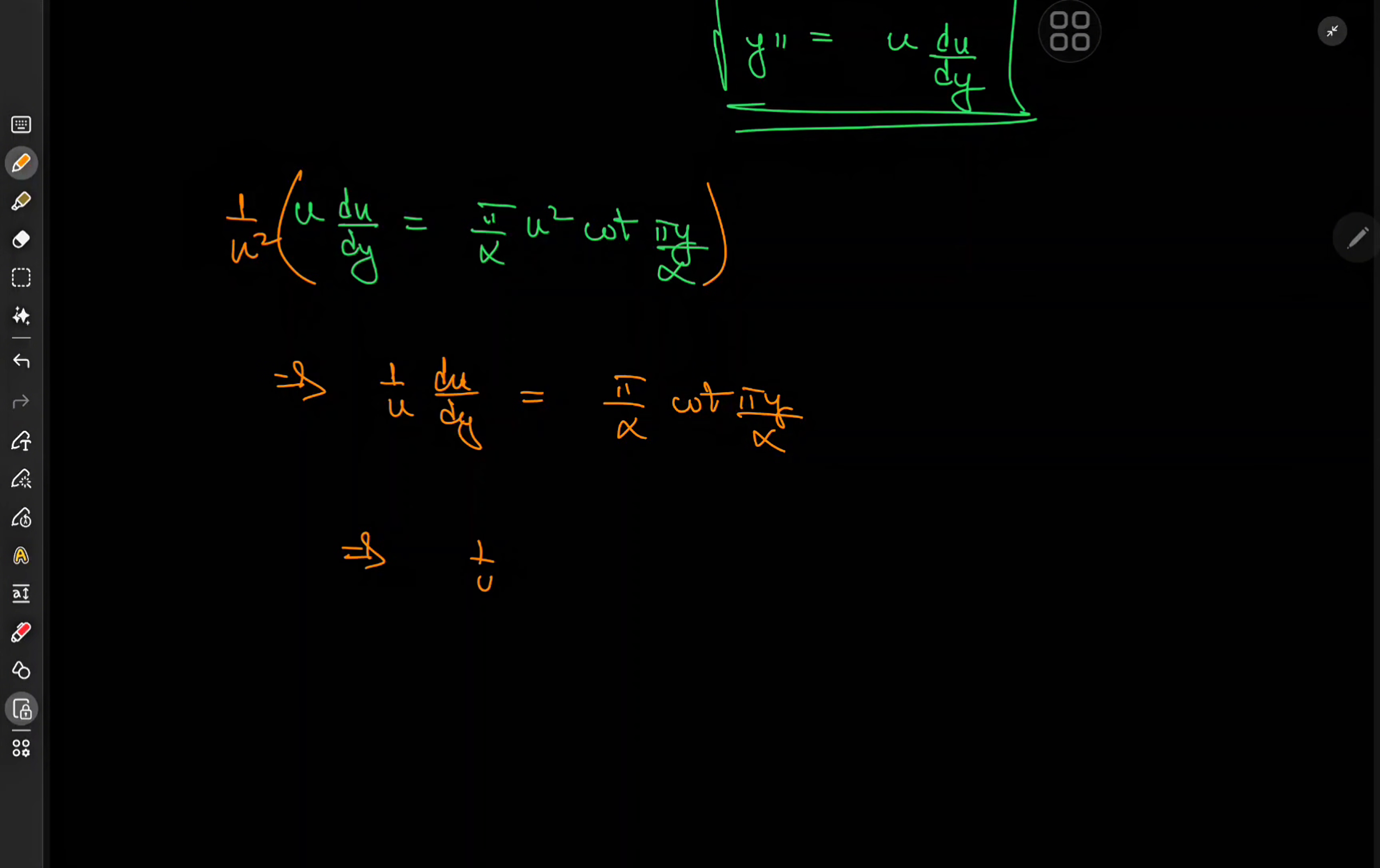So we'll write this as 1 over u du equal to pi over alpha times the cotangent of pi y over alpha dy, and we'll integrate.